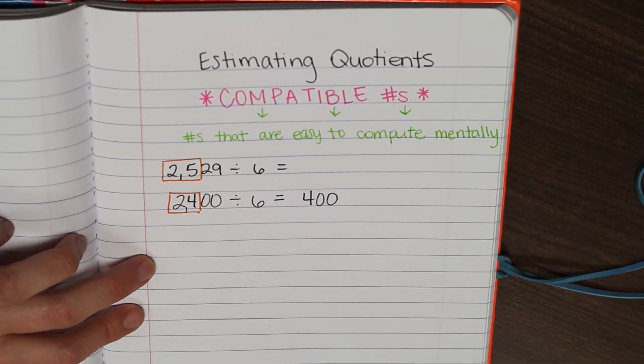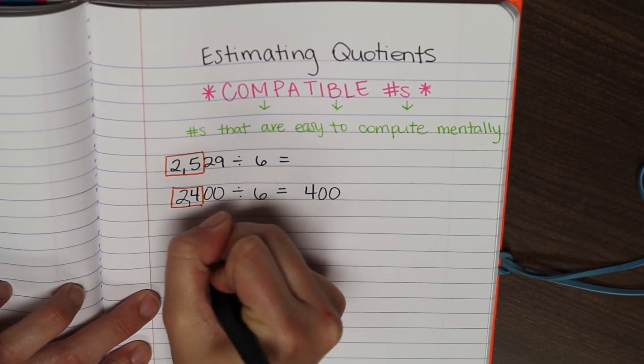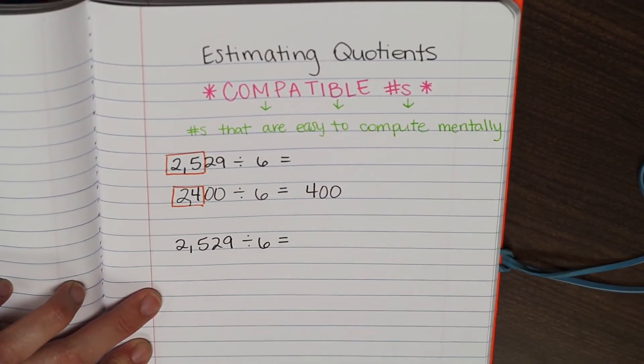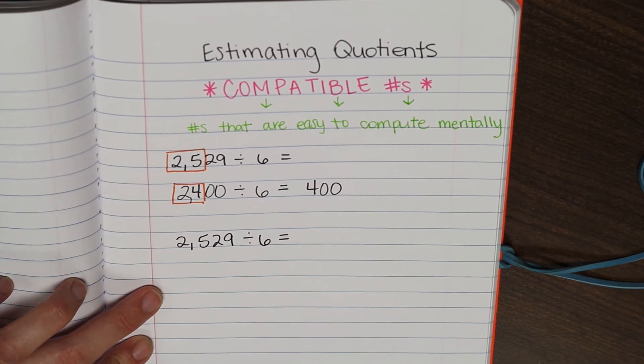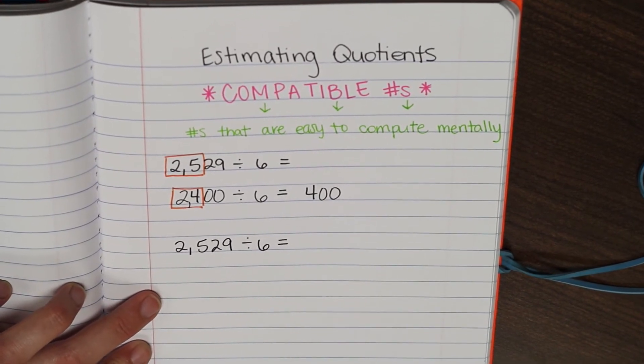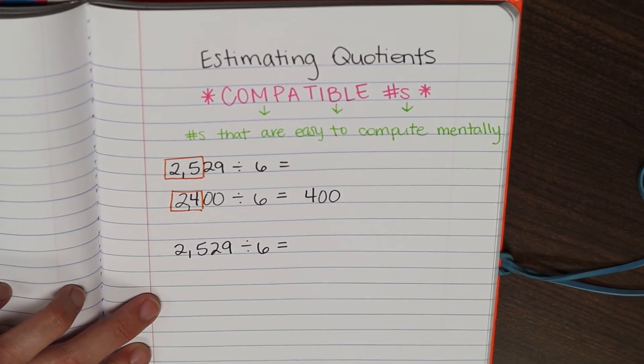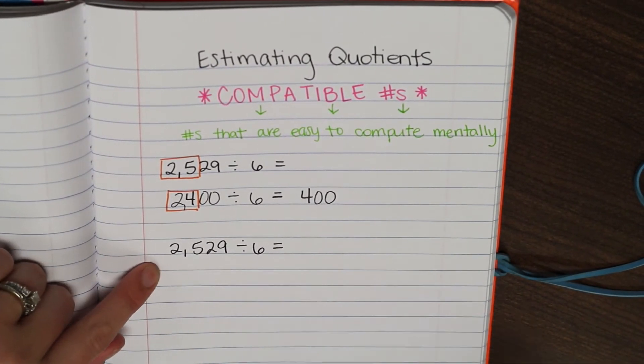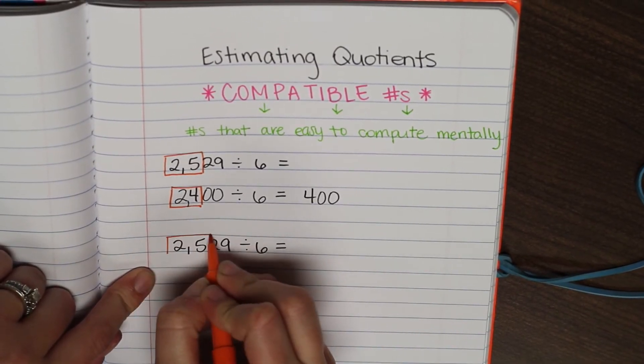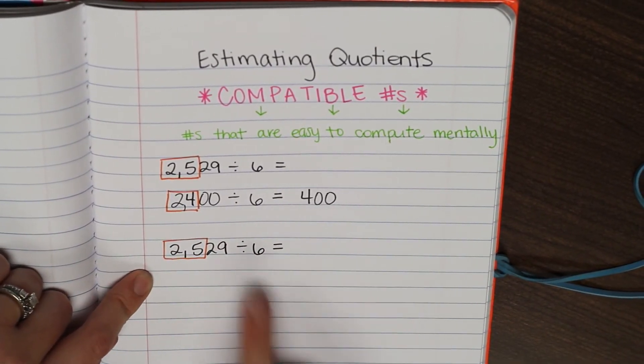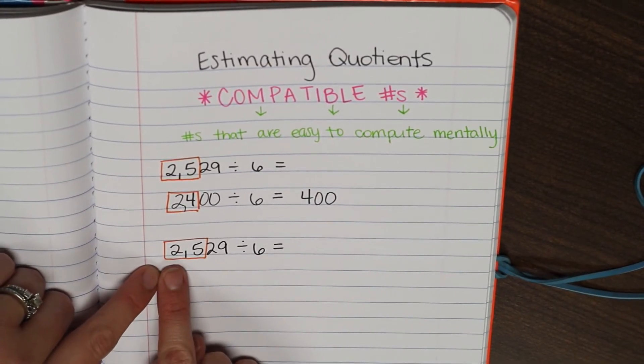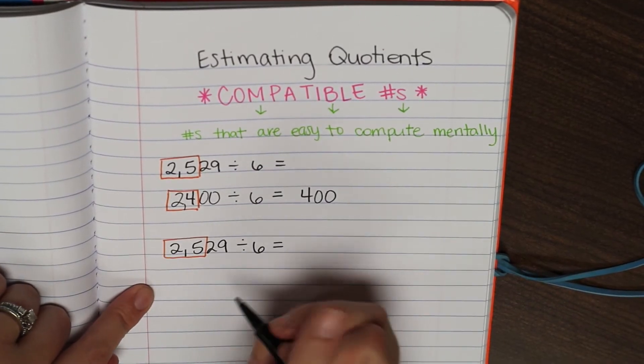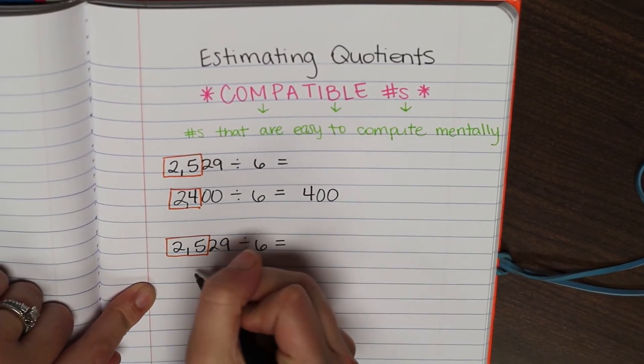So let's do the same thing, but a different way. 2,529 divided by 6. So now we're going to follow the same steps, but we're going to find an estimate that is rounding up instead of rounding down like we did this time. So think of, first put your box around 25. So think of a multiple of 6 that's close to 25, where we would be rounding up. That would be 30.